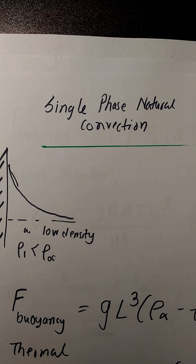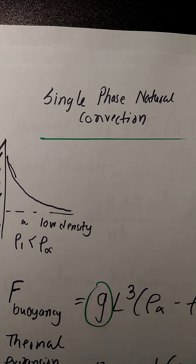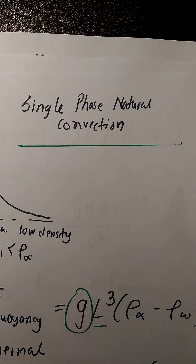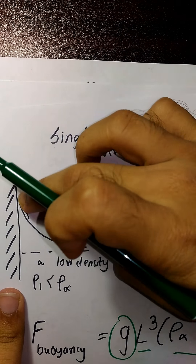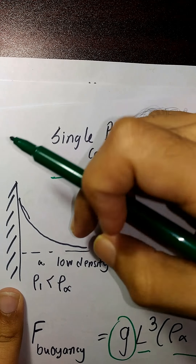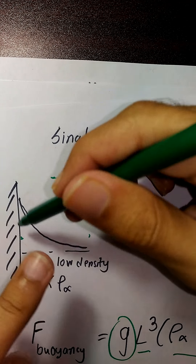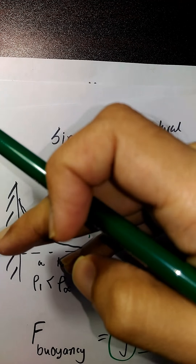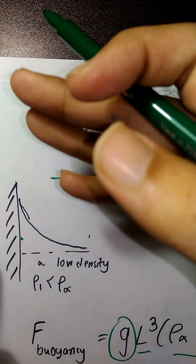For considering the force, we have to take G, which we always need. This represents the volume, and density is rho-infinity minus rho-w — the change in density, because the density has changed. This density change will cause the less dense fluid to go up, and the more dense or heavier fluid will go down.